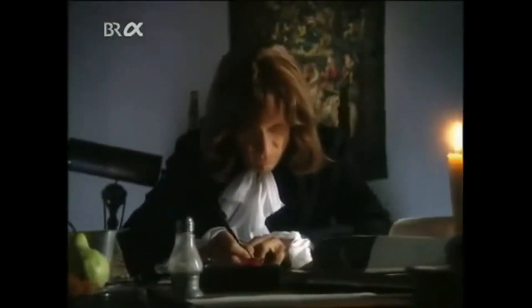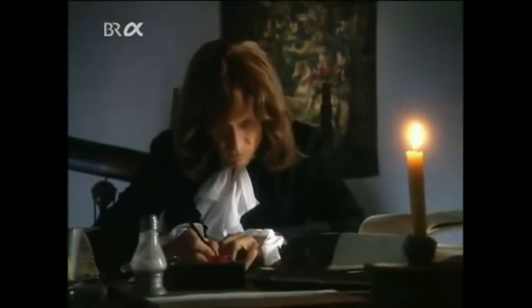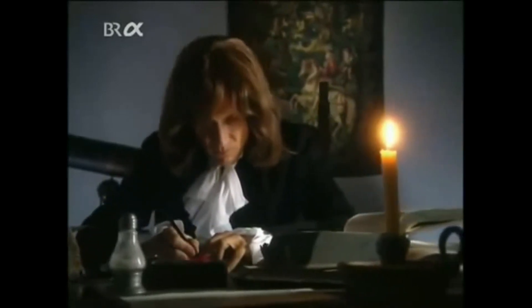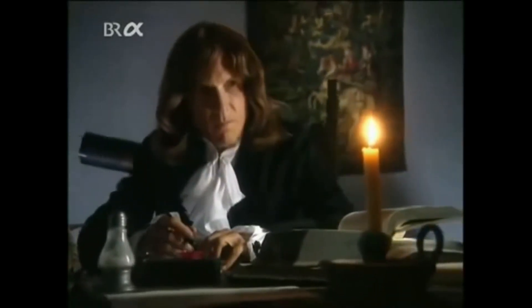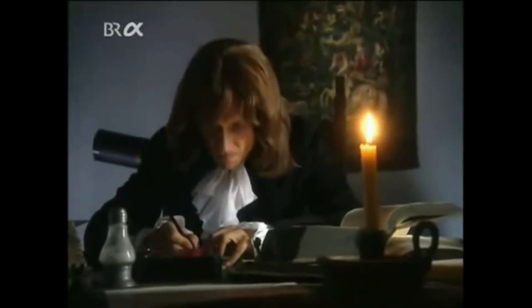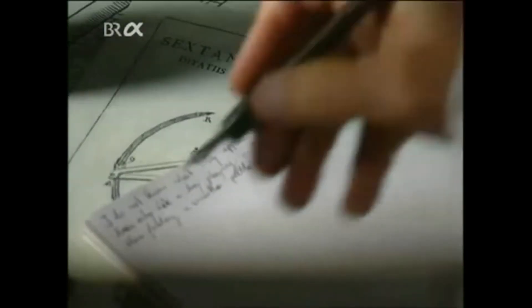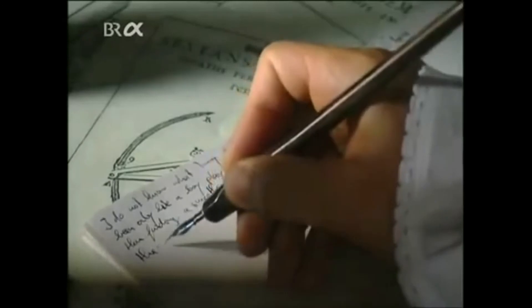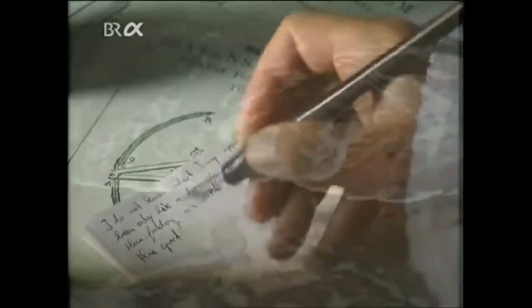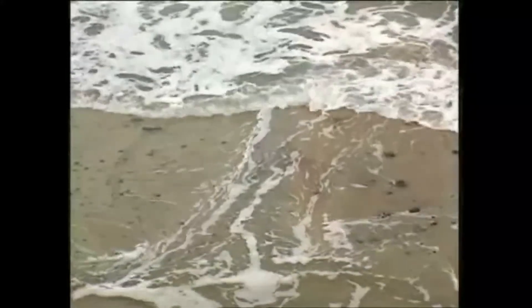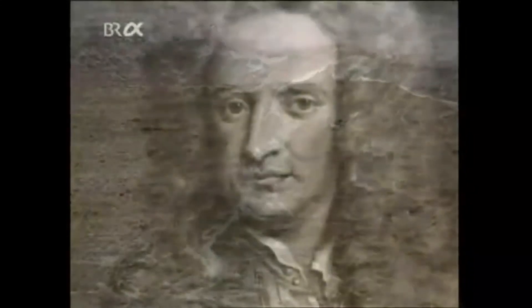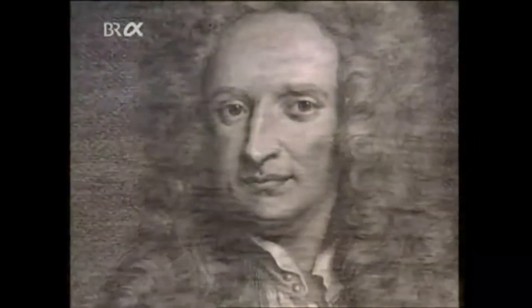For all his success, Newton was aware of the limitations of his scientific knowledge. In his notes we find this sentence: 'I do not know what I may appear to the world. But to myself, I seem to have been only like a boy playing on the seashore, and diverting myself in now and then finding a smoother pebble or a prettier shell than ordinary, whilst the great ocean of truth lay all undiscovered before me.'